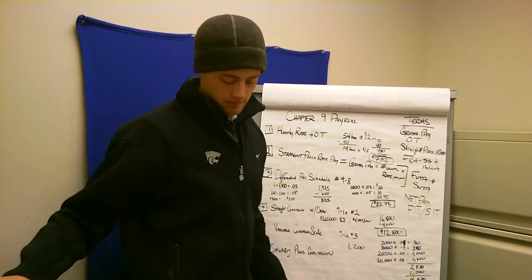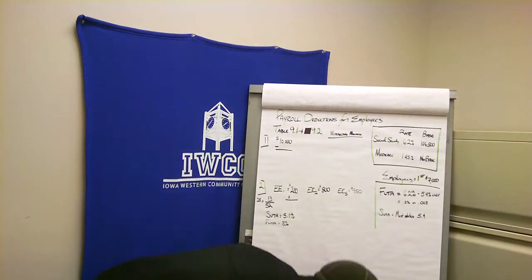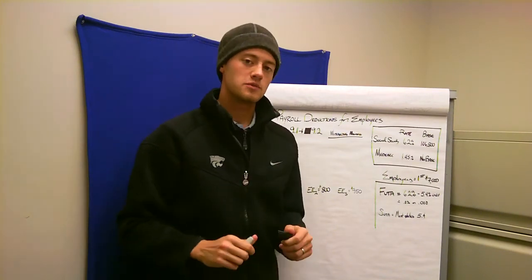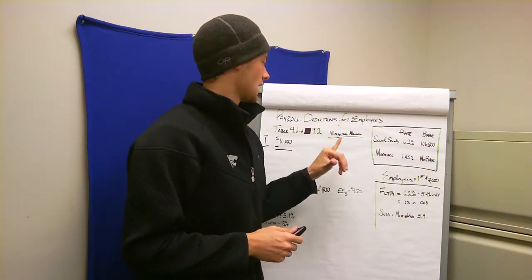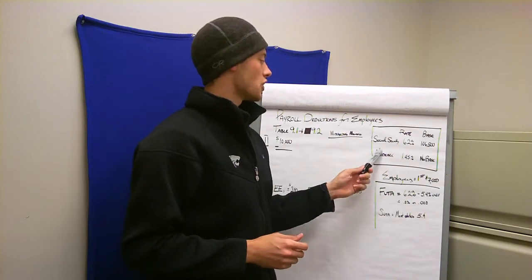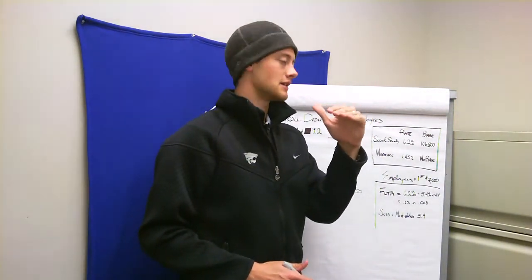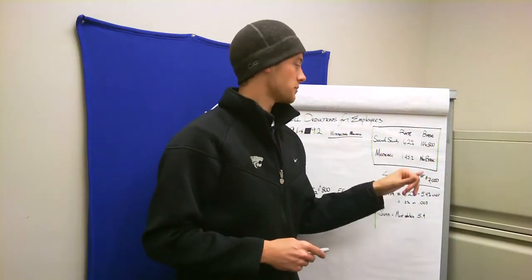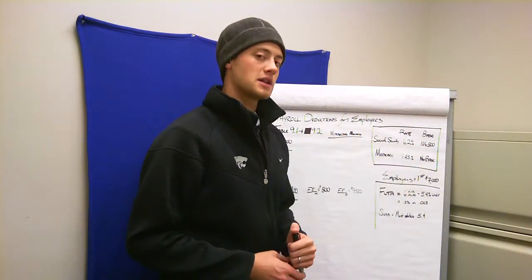The second part of this chapter covers calculating how much in deductions is taken out of your paycheck. Pay attention to Table 9.1 and Table 9.2. When you fill out your W-4 at the beginning of working somewhere, you write how many allowances you have, and this determines what tax will be taken out. Social Security is at a rate of 6.2%, up to $106,800. Medicare is unlimited, so Warren Buffett pays 1.45% on however many millions he makes, whereas Social Security stops at $106,800.